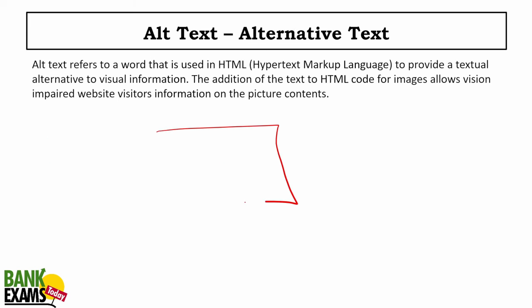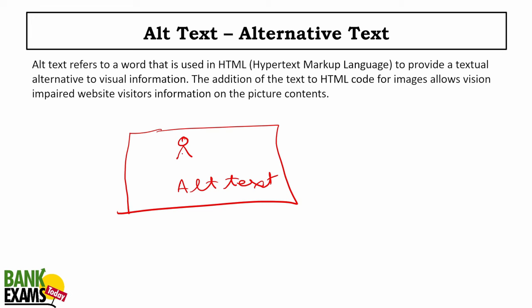Alt text: Google cannot read images, so we give an alt text to describe the image to the search engine crawlers. For example, if there is an image of a bicycle, we give it an alt text of 'bicycle' so we are telling the crawlers what it is. Alt text provides a textual alternative to visual information — you give every image a proper name on your website.